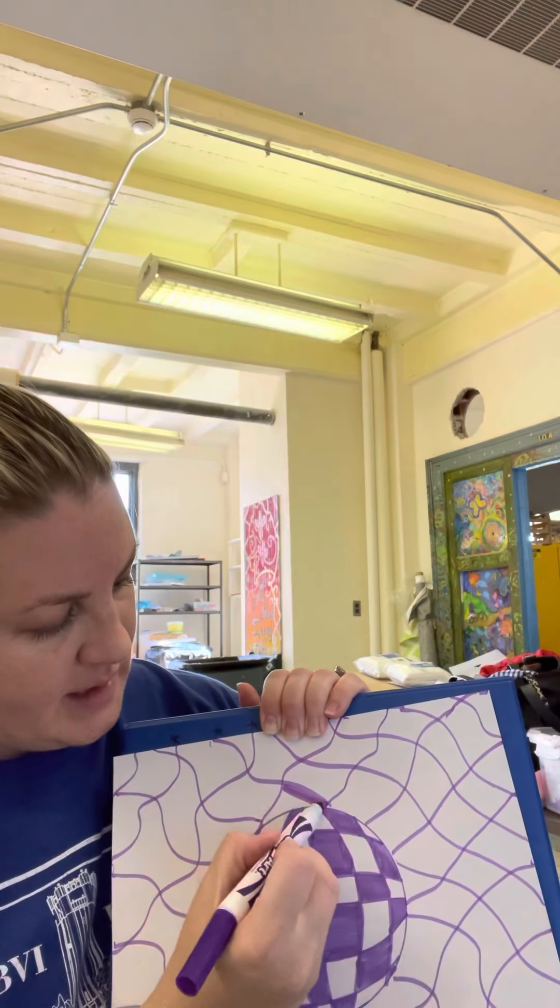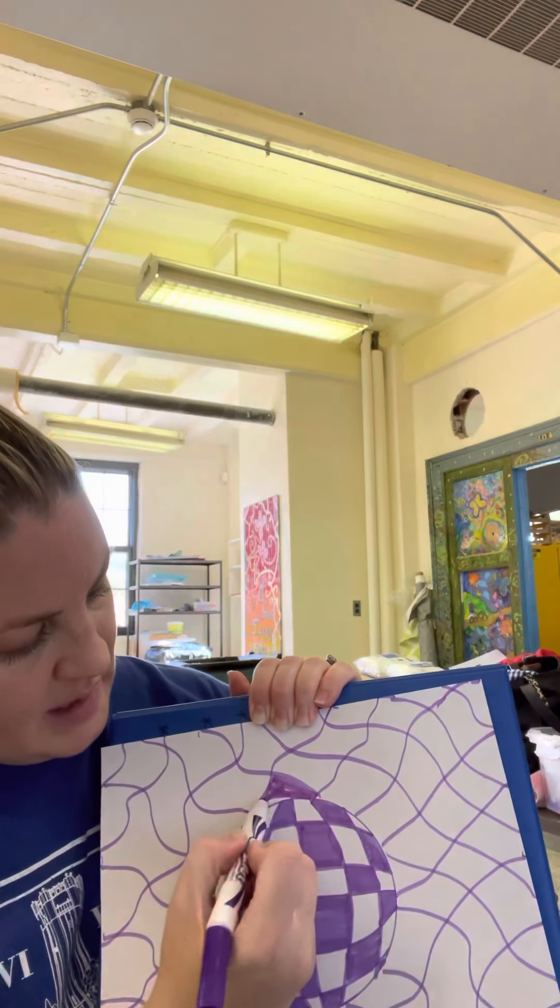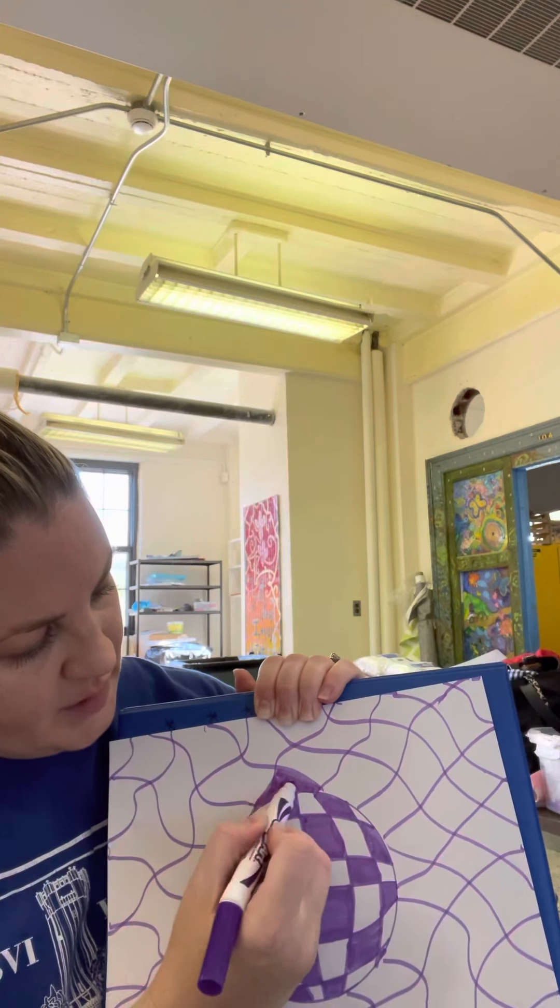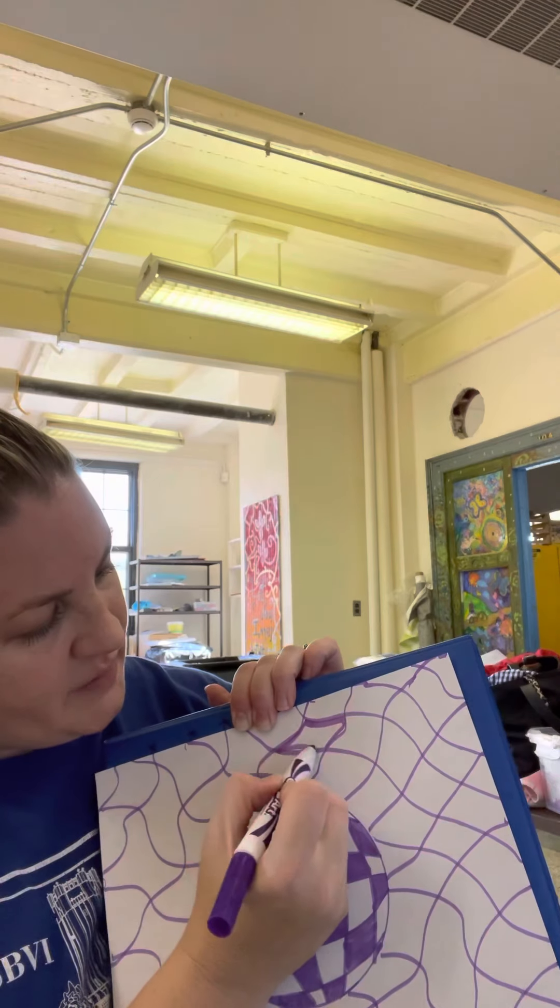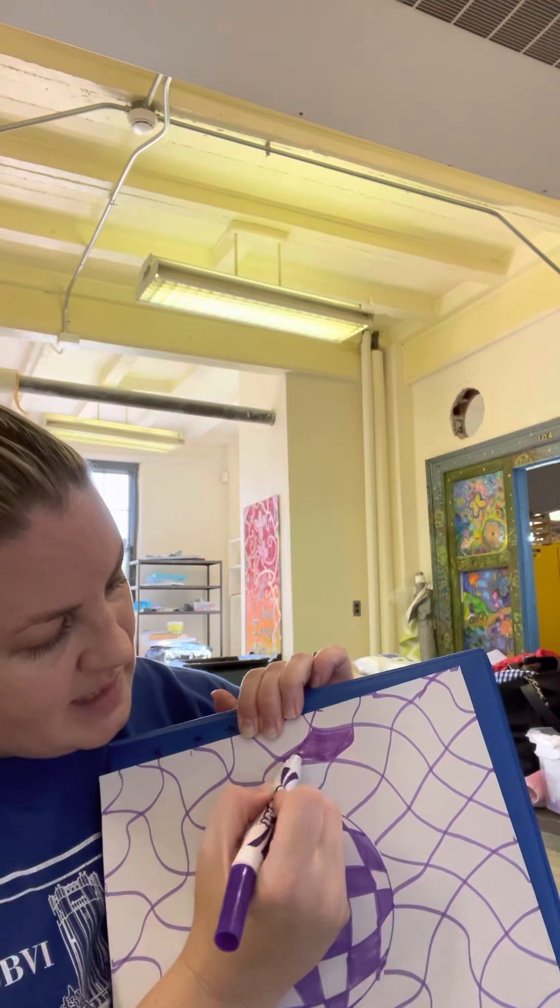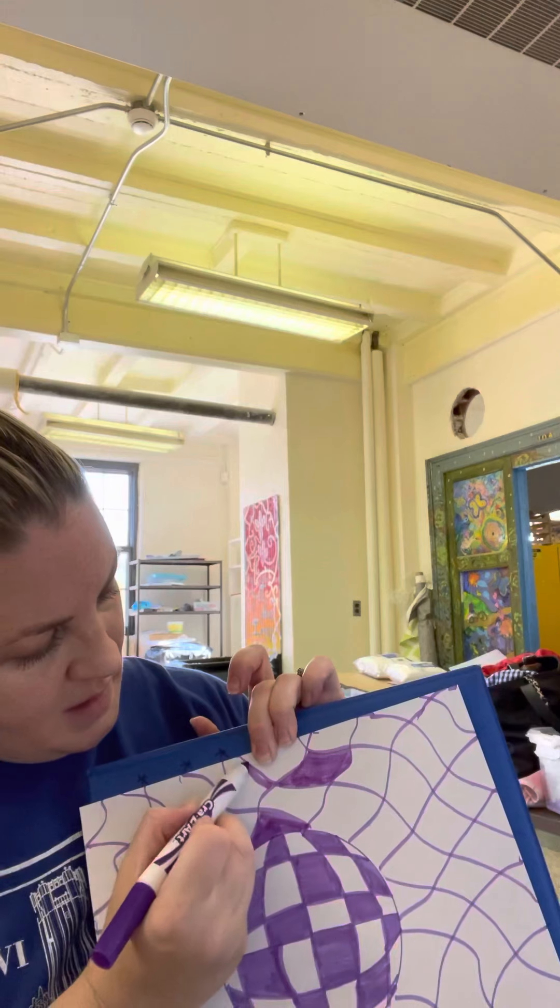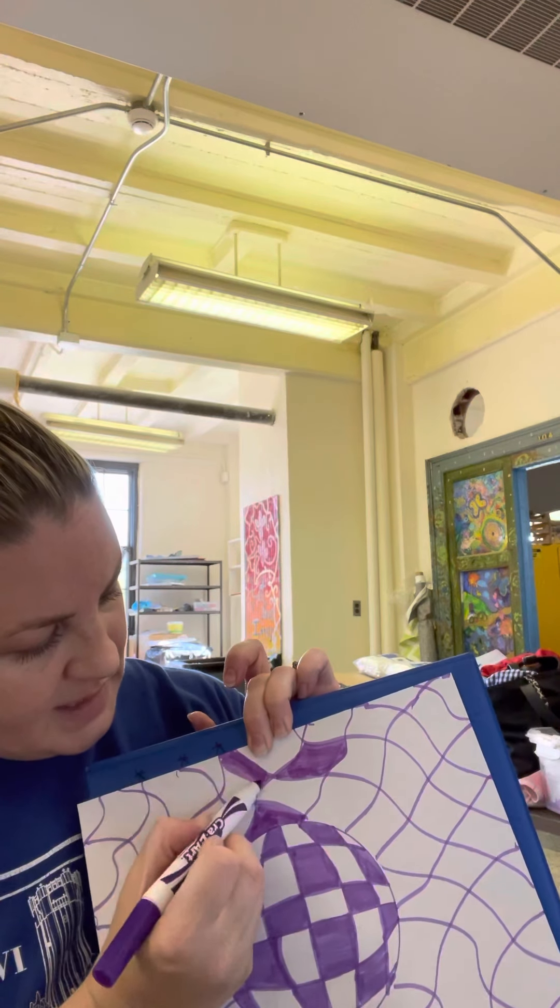I'm going to go ahead and I'm going to keep with the purple on mine, and then I'm going to start doing a checkerboard for these curvy areas. So, it's the same kind of pattern throughout the entire thing.